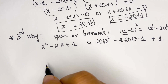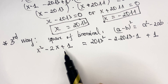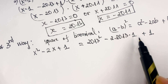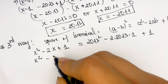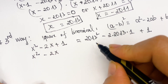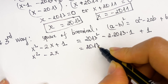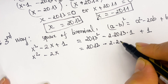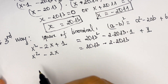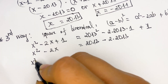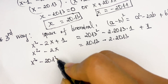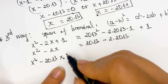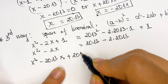Looking at both sides, we can cancel the plus 1 terms. So we rewrite: x squared minus 2x equals 2013 squared minus 2 times 2013. Rearranging, we get x squared minus 2013 squared minus 2x plus 2 times 2013 equals zero, which we can write as x squared minus 2013x plus 2011x minus 2013 squared plus 2 times 2013 equals zero.